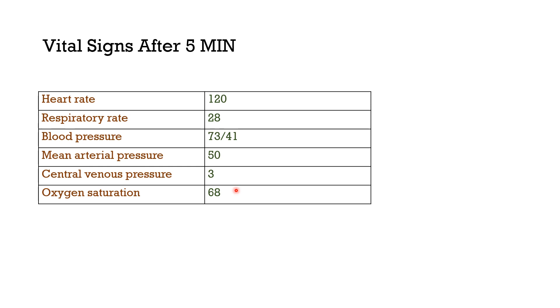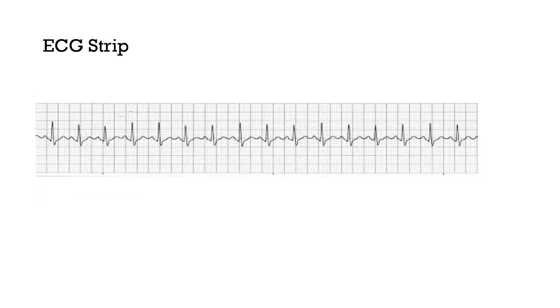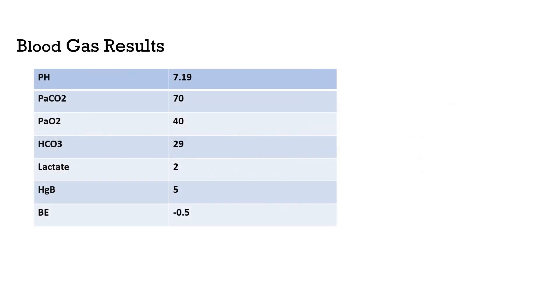ECG shows sinus tachycardia. ABG reveals respiratory acidosis: pH 7.1, pCO2 70. There is also a drop in hemoglobin to 5 g/dL — a 4-gram drop from the previous CBC value of 9 g/dL.